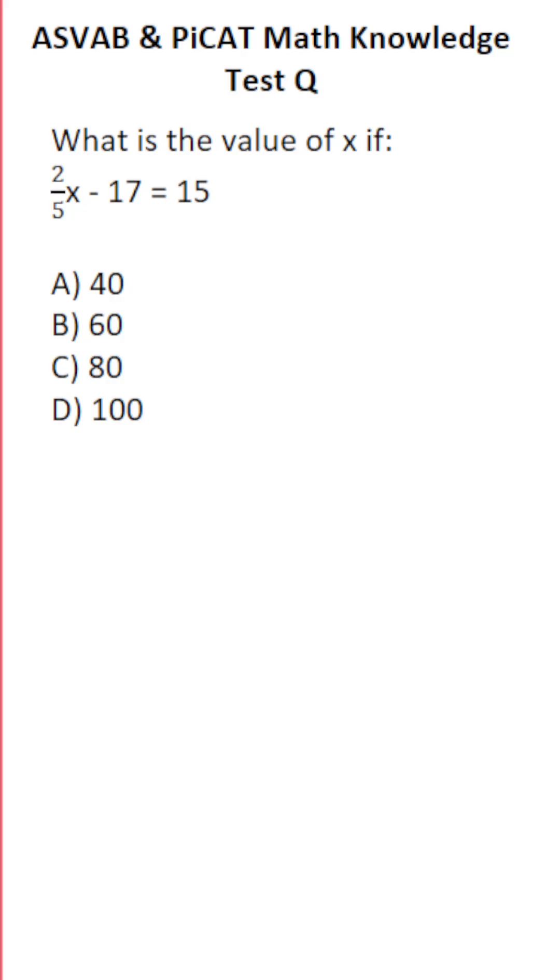This math knowledge practice test question for the ASVAB and PICAT says what is the value of x if two-fifths x minus 17 equals 15? So we're solving the equation two-fifths x minus 17 equals 15. In other words, we want to get x equal to something by itself.